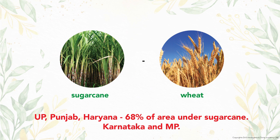Sugarcane–wheat is another major cropping pattern. The majority of this pattern is cultivated in Uttar Pradesh, Punjab, and Haryana, with 68% of area under sugarcane, followed by Karnataka and Madhya Pradesh.